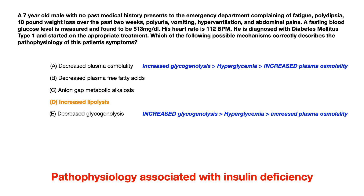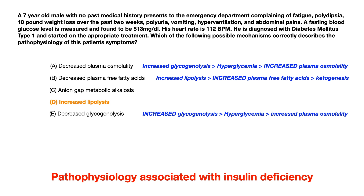Let's look at answer choice B: decreased plasma free fatty acids. What's actually happening in an insulin deficient state is increased lipolysis, and increased lipolysis causes increased plasma free fatty acids, which causes ketogenesis, which causes anion gap metabolic acidosis, which causes vomiting, hyperventilation, and so on. So choice B is incorrect for the same reason that choice D is correct.